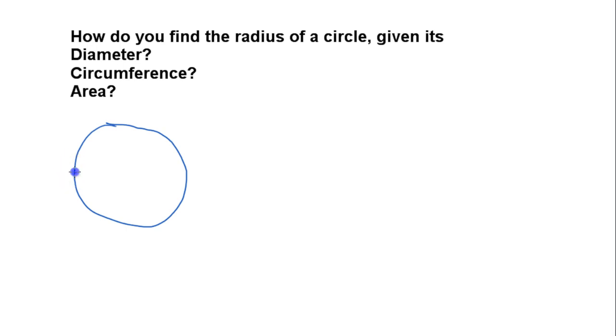And the diameter. The diameter is the distance across the middle. That's the diameter, and we know that the radius is half of that distance across the middle. So we've got this r distance.